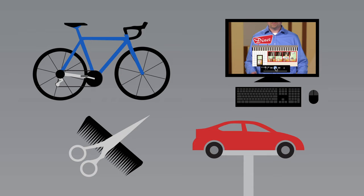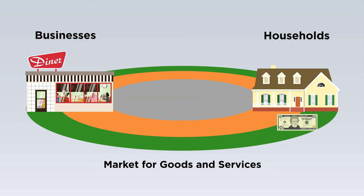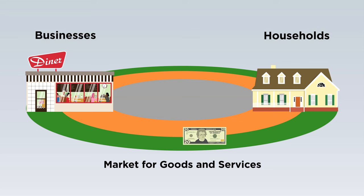Businesses sell these goods and services to households in the market for goods and services. For example, the diner produces cheeseburgers, fries, and milkshakes. Households use part of their incomes to buy goods and services, and the payment businesses receive is called revenue — at the diner, revenue comes from customers paying for their food. In the market for goods and services, businesses sell goods and services and households buy goods and services. Products flow one way, and money flows the other.